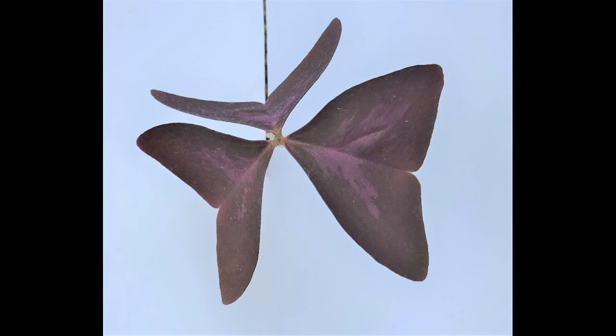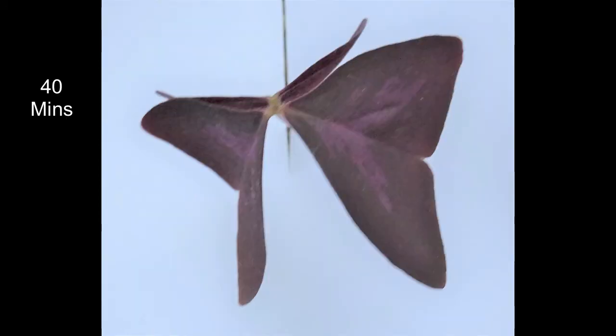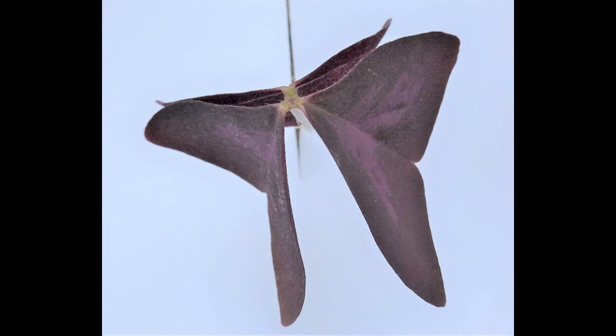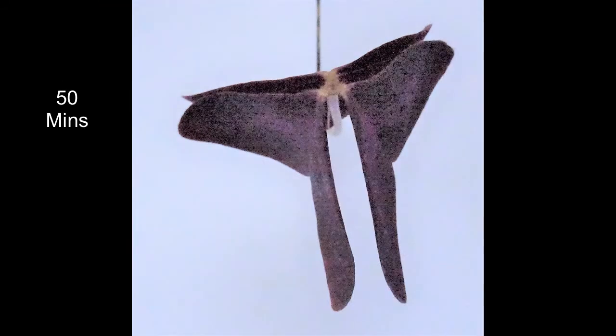This occurs fairly rapidly and is not because of growth, instead because of changes in water pressure, known as turgor pressure, in the cells where the leaflets join the main stalk.